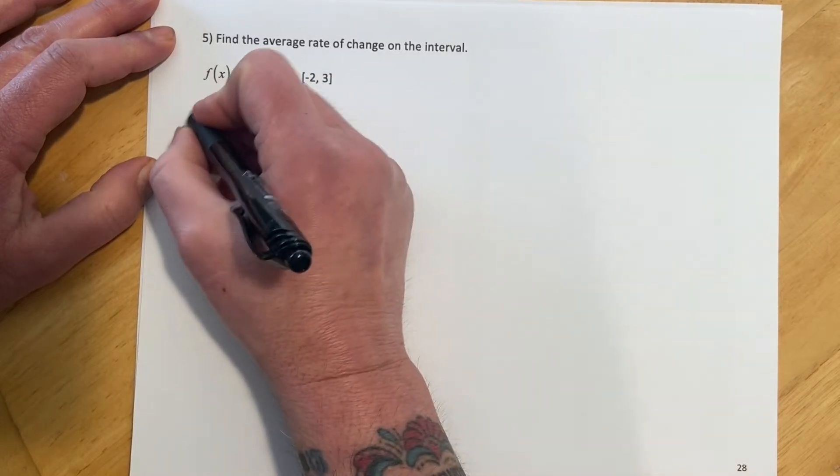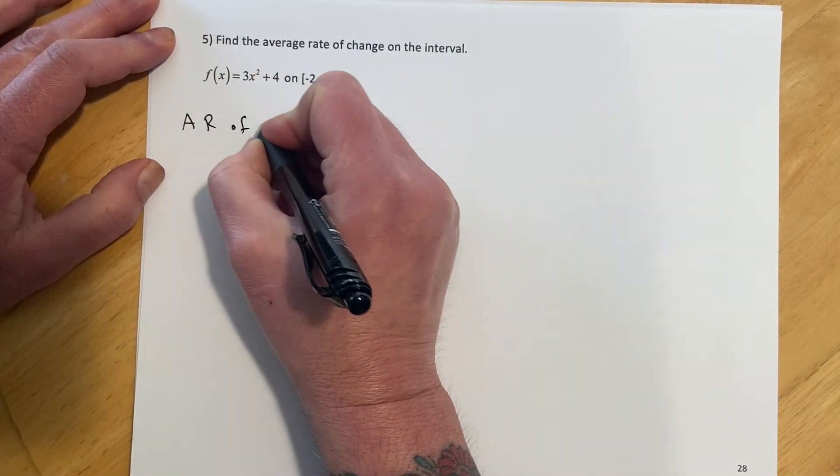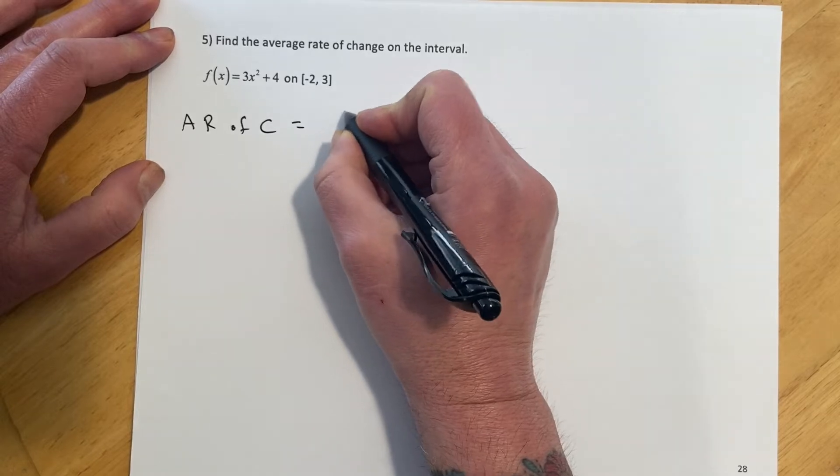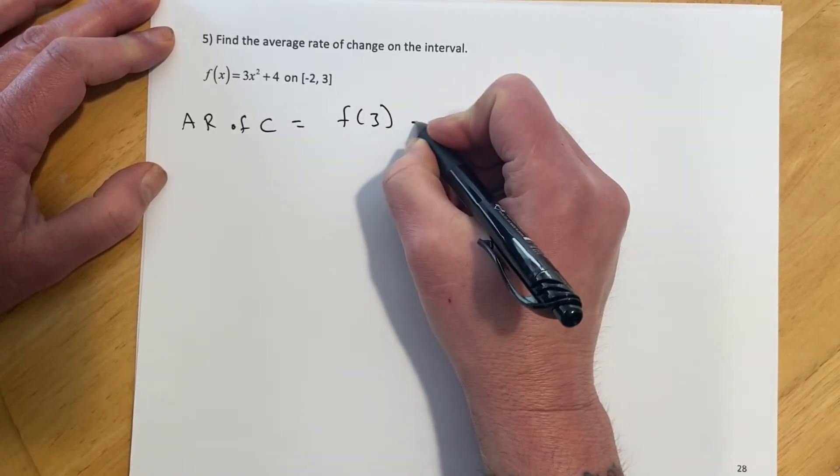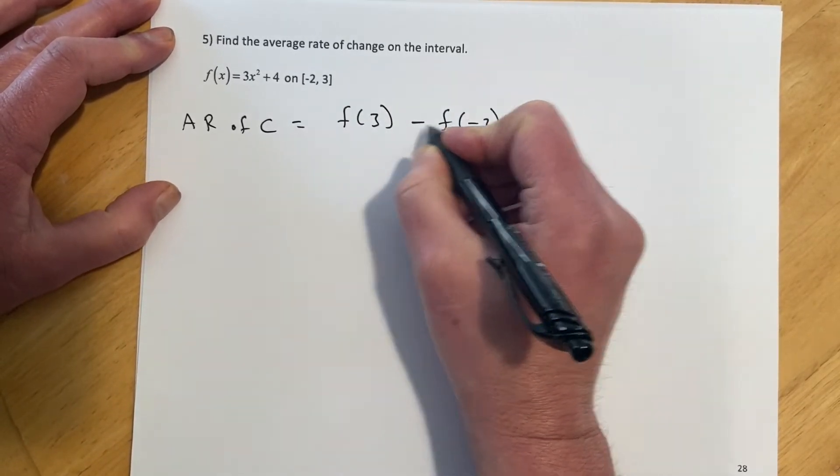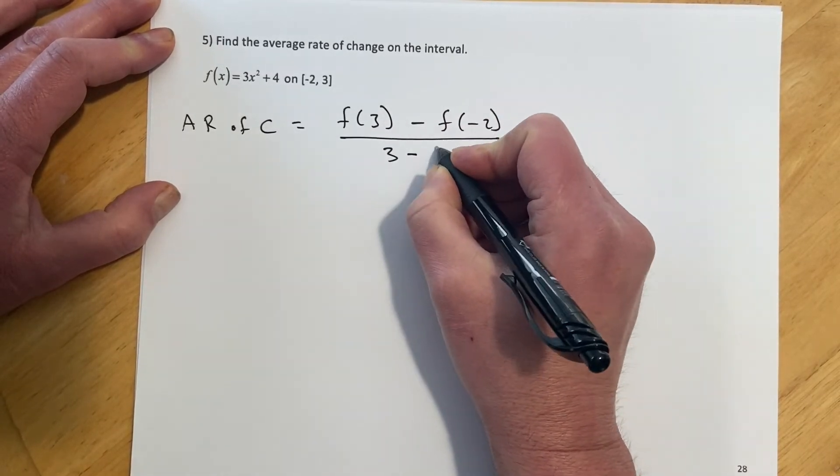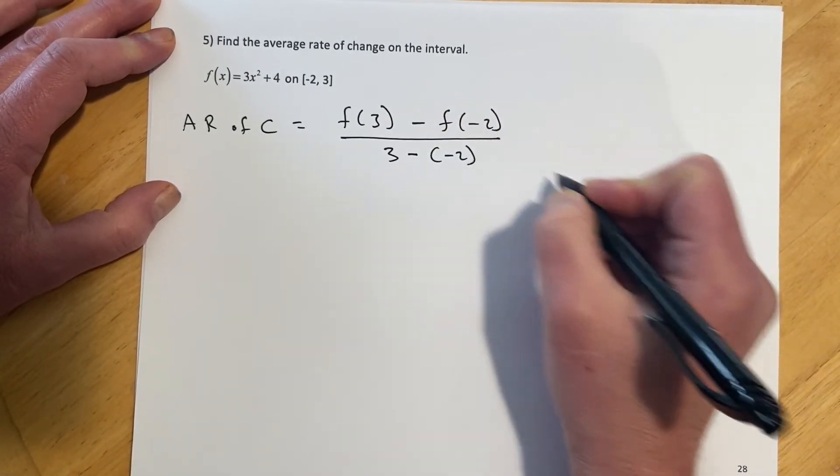we're going to find our average rate of change is going to equal f(3) minus f(negative 2) over 3 minus, careful with the signs, negative 2.